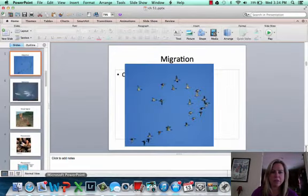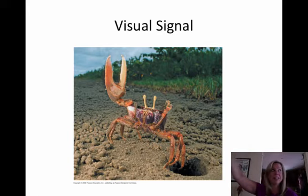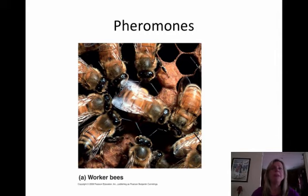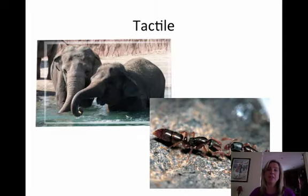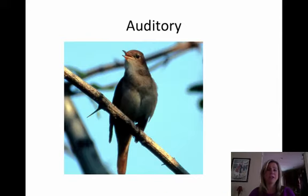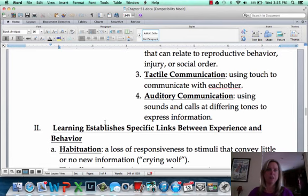Here's a visual signal example: the fiddler crab. The male waves his big claw to signal that he can build a nice house and has good genes — the size of the claw matters in attracting females. For pheromones, bees, ants, and most insects are well known for using them heavily. Tactile communication uses touch — mammals do this a lot; when someone is upset, we hug them or put a hand on their back. Ants also use tactile communication alongside pheromones. Finally, auditory communication includes bird calls and talking. In the next video, we'll start talking about what happens when you get used to some sort of behavior.